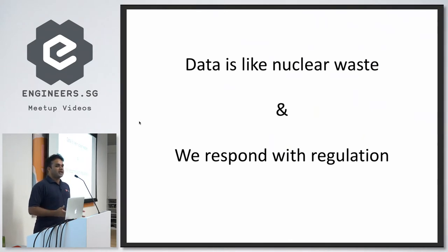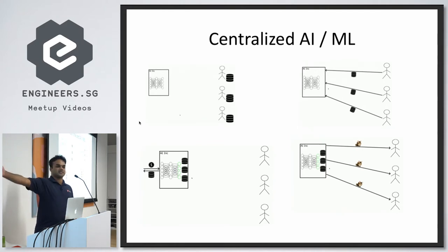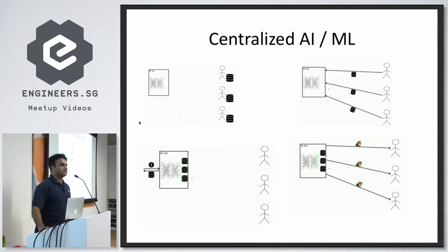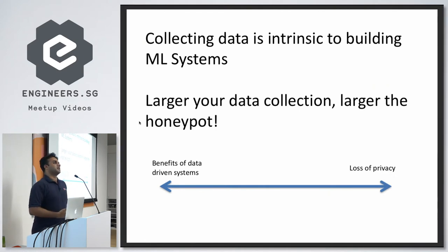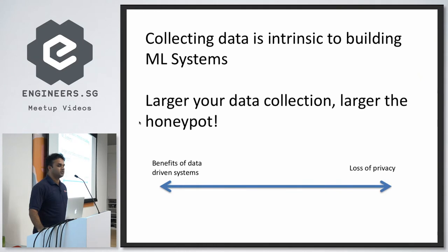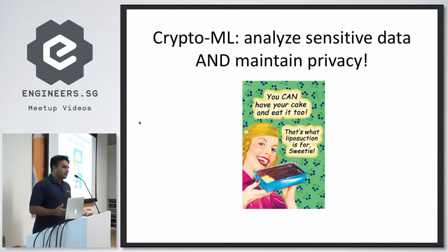The way we respond to that today is with regulation. Users give up their data, and then AI Inc. trains models to maybe serve you better cat pictures. Collecting data is an intrinsic feature of building machine learning systems, and the more data you collect, the bigger a honeypot you create for hackers. That's where cryptography and machine learning come in — the point is to analyze sensitive data and still maintain privacy.